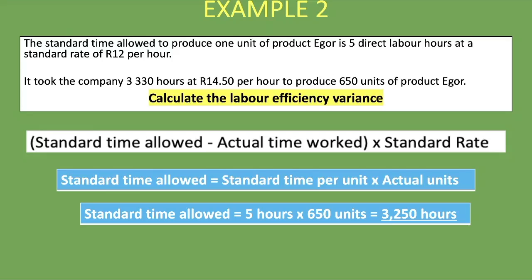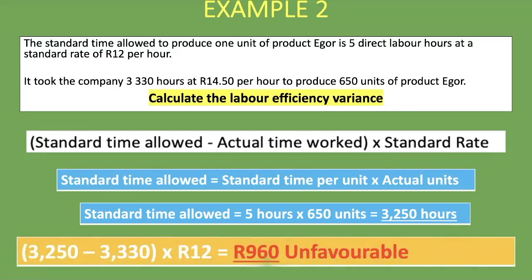The actual time worked is 3,330 hours. So: (3,250 hours − 3,330 hours) × 12 rand per hour. Punching this into the calculator gives a negative answer, meaning the variance is unfavorable. This makes sense because we used more time (3,330 hours) than the standard allowed (3,250 hours) to produce the 650 units, which means we spent more money.